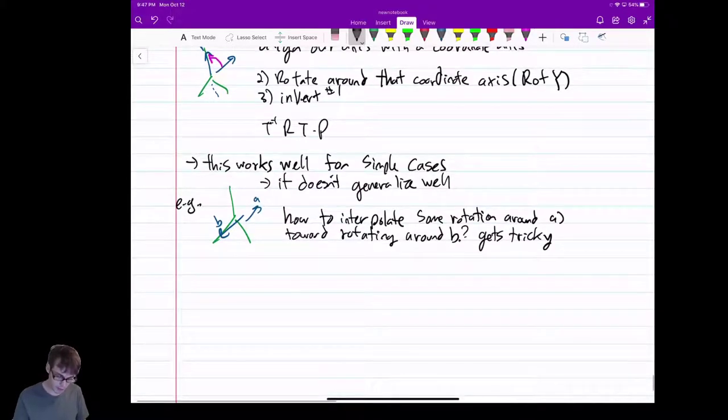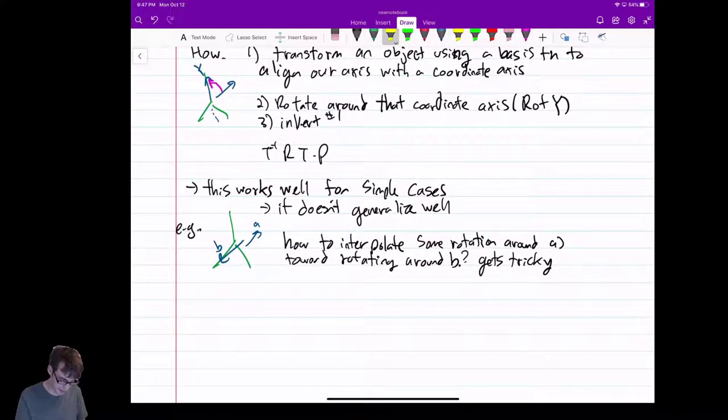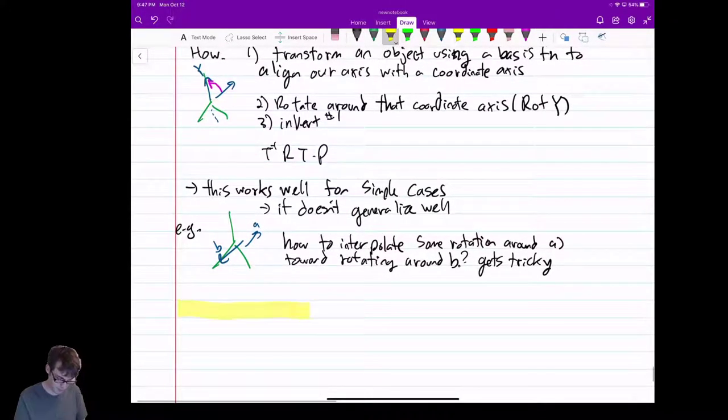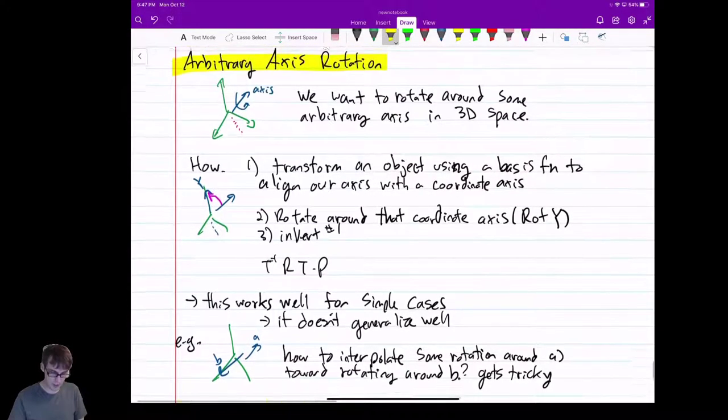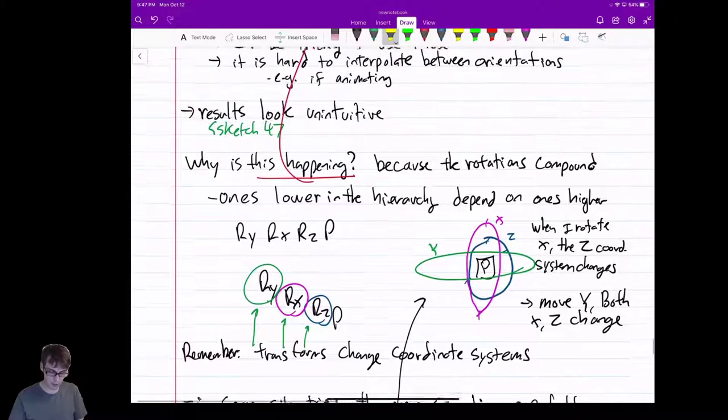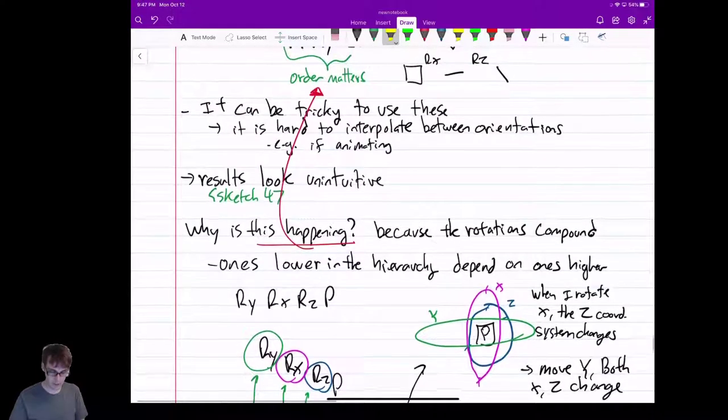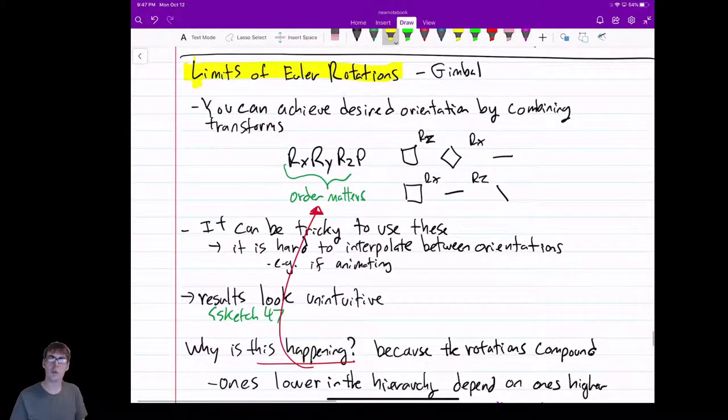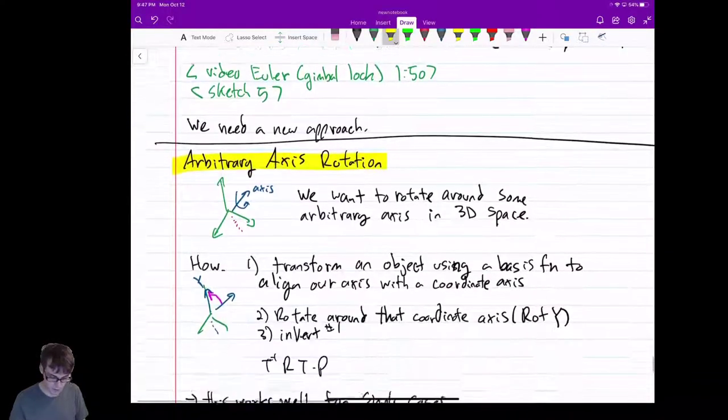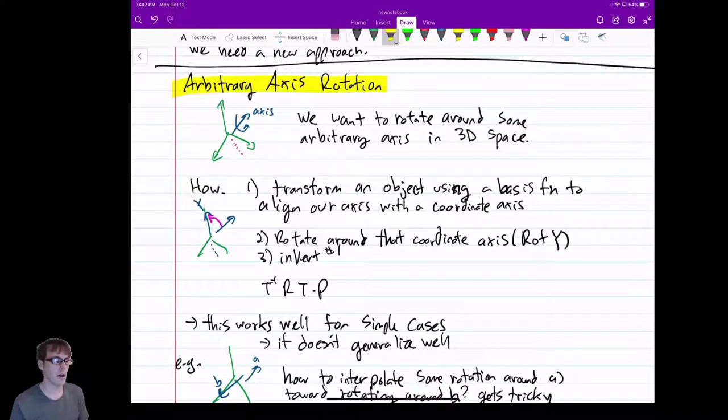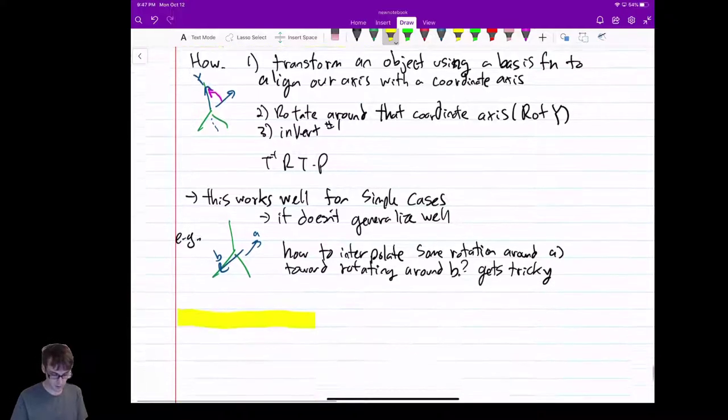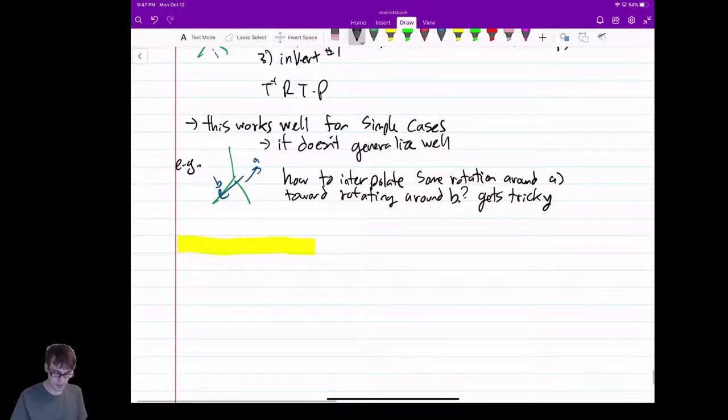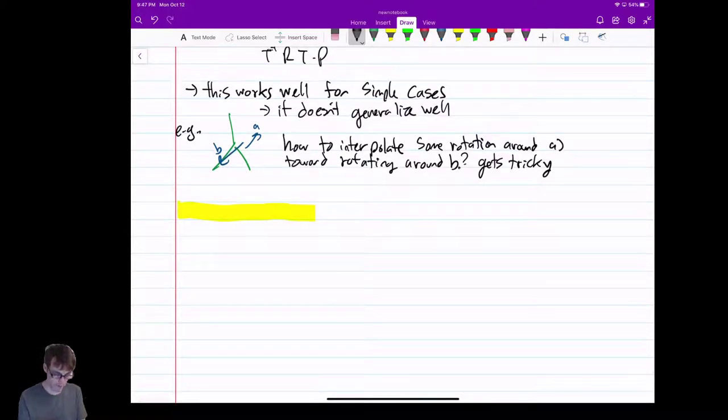So there's a better way. But before I talk about the better way, it's a better way that's really confusing and hard. I want to highlight something. A lot of programs, a lot of games, a lot of movies, they get away with using the Euler rotations. They get away with using this technique for arbitrary axis rotation. It's enough. And if it's enough for your needs, that's fine. But there's a more complicated way that just opens all the doors and you can do everything you want. And it's a technique called quaternions.